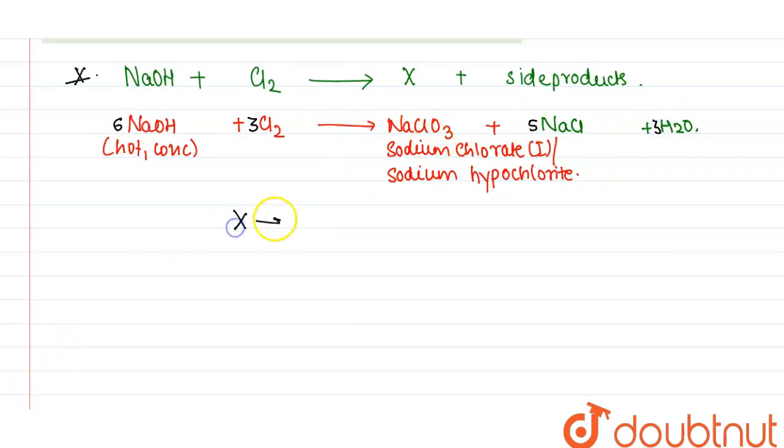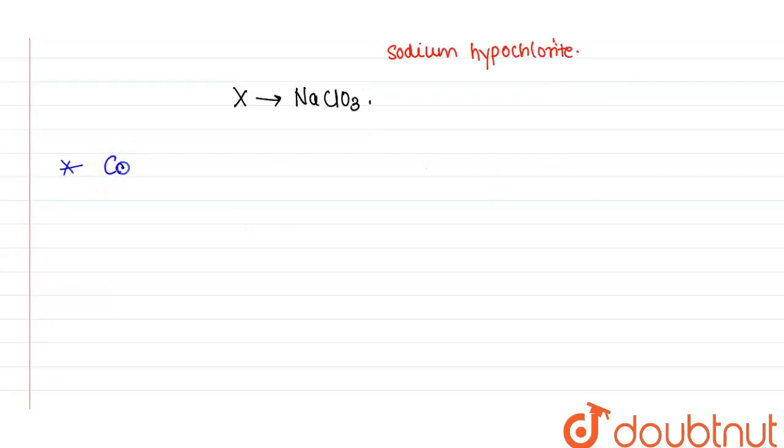We can see that X in this reaction is NaClO3. Now, the next reaction is Ca(OH)2 dry, plus chlorine, it will give us Y along with side products.